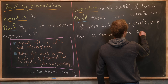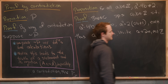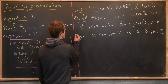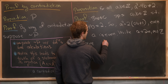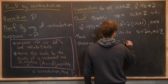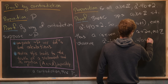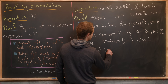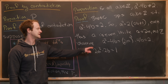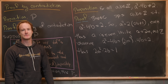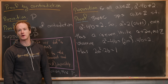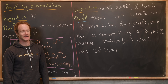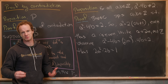Write a equals two m for some integer m — that's the definition of an even integer — and plug it into our equation. We get a squared minus four b equals the quantity two m, squared, minus four b equals two. Dividing both sides by two gives two m squared minus two b equals one. We can see there's already a problem: the left-hand side is even but the right-hand side is odd. But let's go for a slightly different contradiction just for fun.